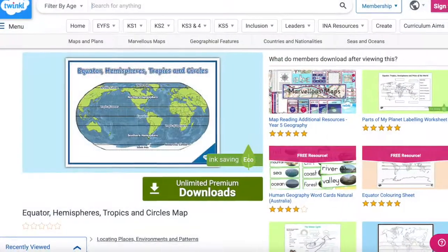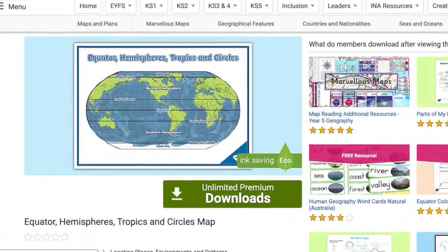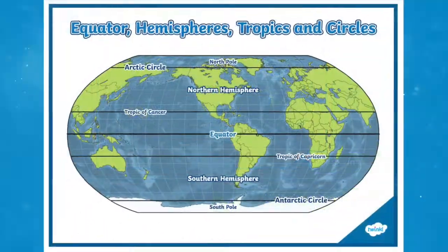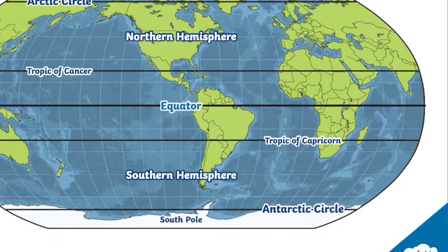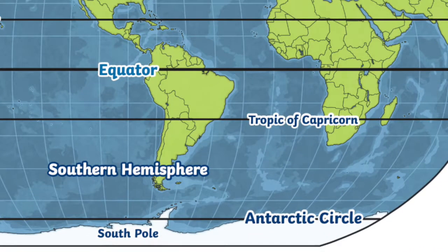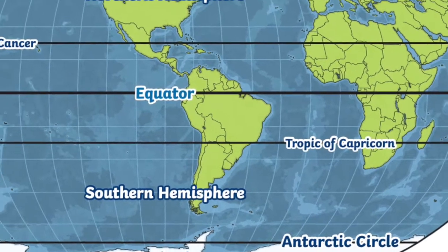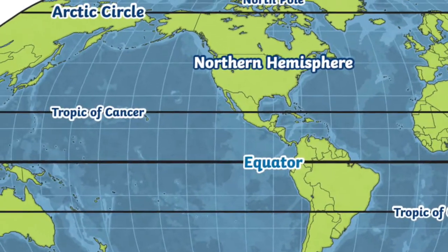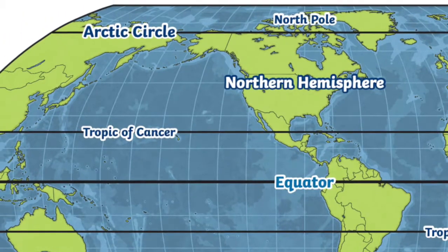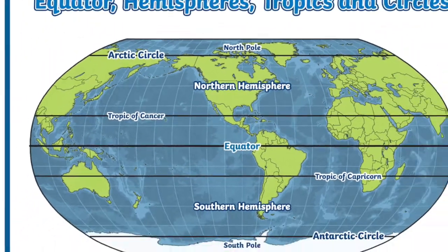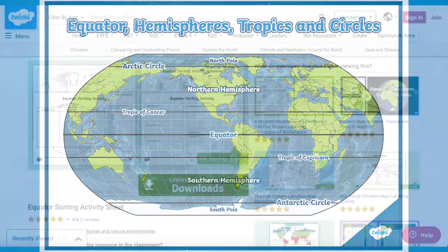The Equator, Hemisphere, Tropics and Circles map is an incredibly useful map of the world for Key Stage 2 that includes the Earth's equator, tropics, hemispheres, poles, and the Arctic and Antarctic circles. It is great to use for displays and also for activities in geography.